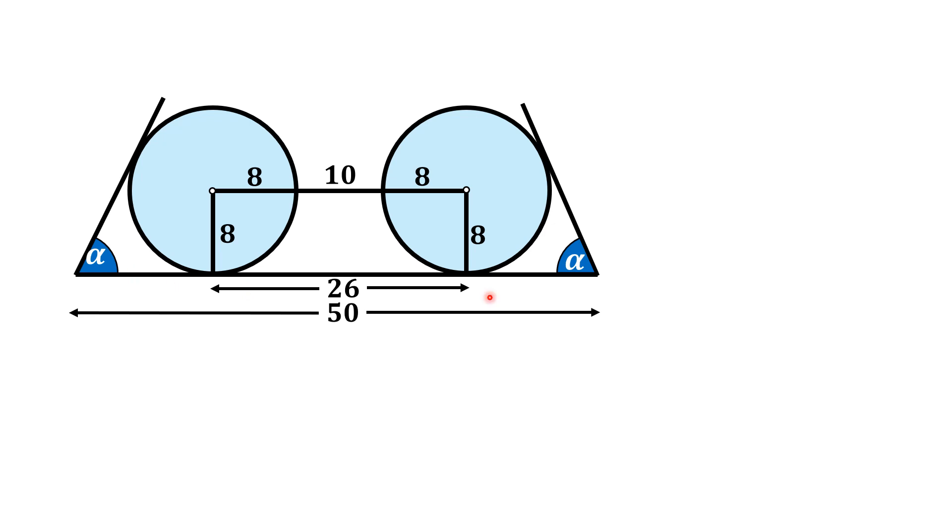Since this whole length is 50, this length is 26, so the sum of these two lengths is 24. And since these lengths are equal, therefore each length is 12 units. So I am going to write here, this is 12 units.